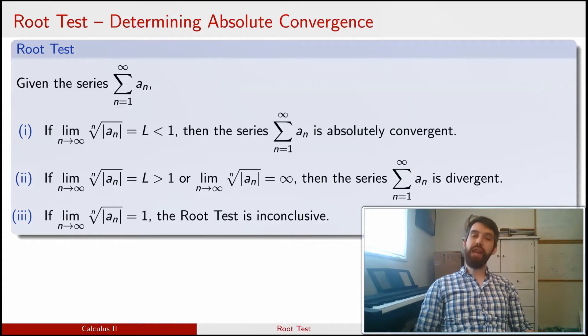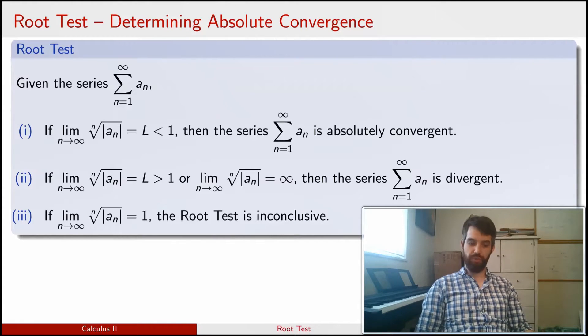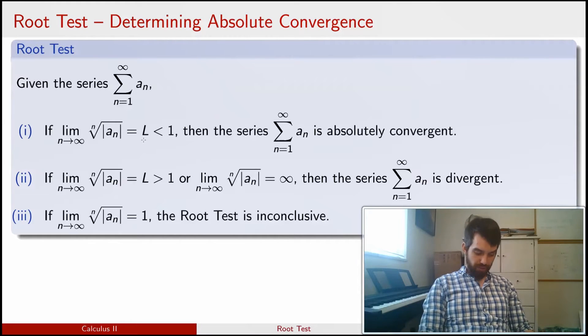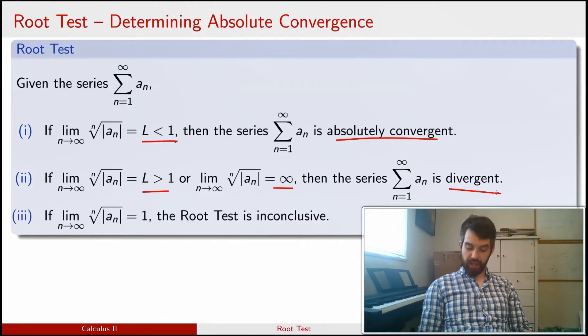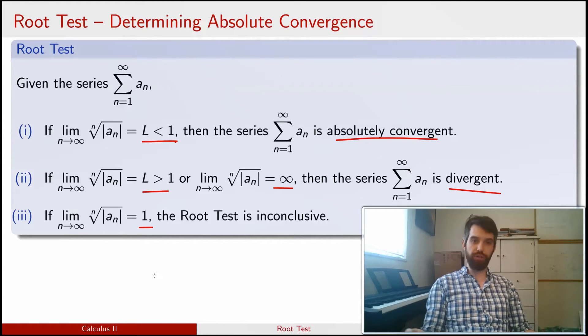And then we get a claim that the structure of which is very similar to the ratio test. If this particular limit that I'm investigating is less than 1, then it's absolutely convergent. If it's greater than 1 or diverges to infinity, then it's going to be divergent. And if it's equal to 1, then the root test is inconclusive and is unhelpful.